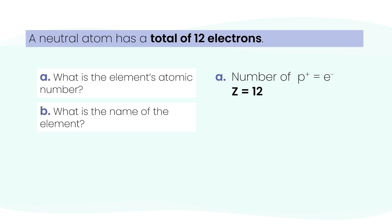For letter B, what's the name of the element with atomic number 12? Check the periodic table. Element 12 is magnesium.